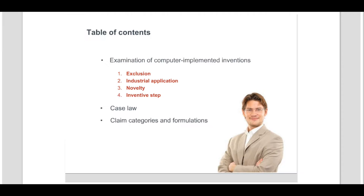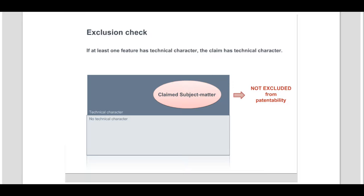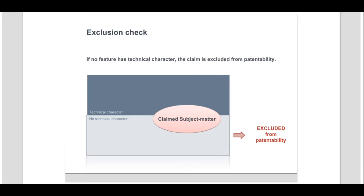The exclusion check can be illustrated as follows. As soon as there is at least one technical feature, the whole claim has technical character and is therefore not excluded from patentability according to Article 52.2 and 3 EPC. If there is no technical character, then the claimed subject matter is excluded from patentability.